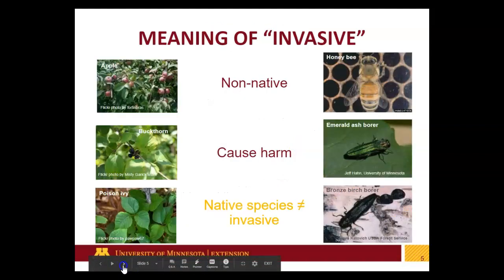The definition of invasive species really matters here. Things can be non-native — apples and honeybees are non-natives, but deeply treasured in the state of Minnesota. Buckthorn and emerald ash borer are both non-natives and cause economic, ecological, and human health harms, and therefore are clearly invasive. Then there are native species like poison ivy and bronze birch borer, which we don't like, but they're native, so they can never be invasive.